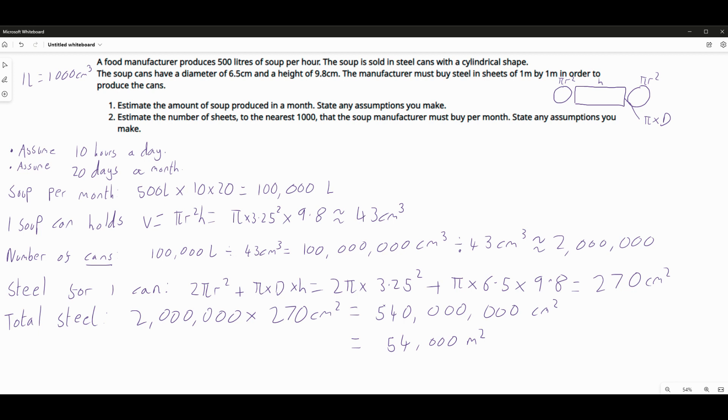That is how much steel we need to produce 2 million cans. So follow the process backwards. I'm saying I need 54,000 meters squared of steel because that will produce me 2,000 cans because this is how much I need to produce one can. My 2 million has come from the fact that I've made an estimate about how much soup I'm producing in a month. I've looked at how much volume one can can hold. There's one final assumption that I need to make and I'll put it back up here with my other assumptions. If you look at the net of the cylinder here you'll see that is not going to come out of a 1 meter by 1 meter square very nicely. There will be some wastage.